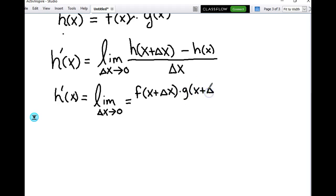Because h of x is just f of x times g of x, so h of x plus delta x is f of x plus delta x times g of x plus delta x minus, of course, f of x times g of x, which is our h of x function, all over delta x.